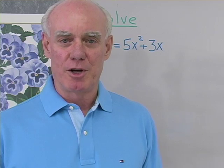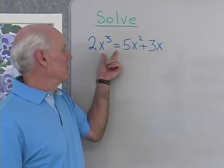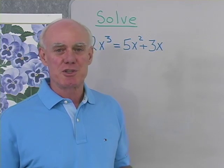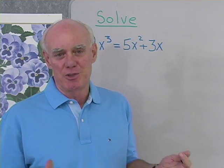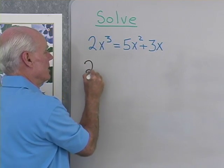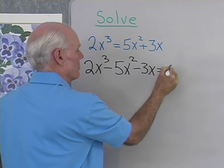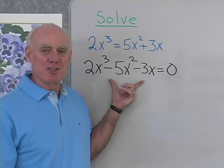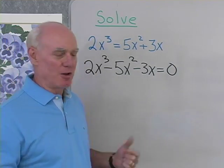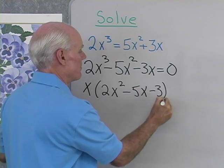The next equation isn't quadratic, but we still use the same methods. We have 2x cubed equals 5x squared plus 3x — it's cubic because the highest power of the variable is 3. We'll still put it in standard form, factor if we can, and set the factors equal to zero. Using the addition property of equality: 2x cubed minus 5x squared minus 3x equals 0. I notice x is common to each term, so I factor that out, leaving 2x squared minus 5x minus 3 inside.